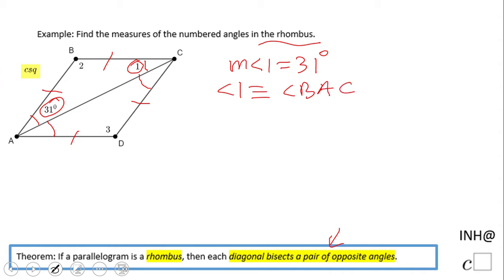Now, how can we find angle 2? We have different choices, but because we're talking about a quadrilateral here, I'm going to use this method: I'm going to find the measure of angle BAD, which is this angle.